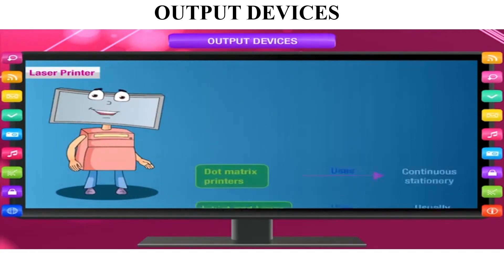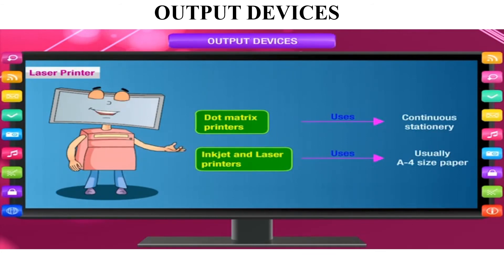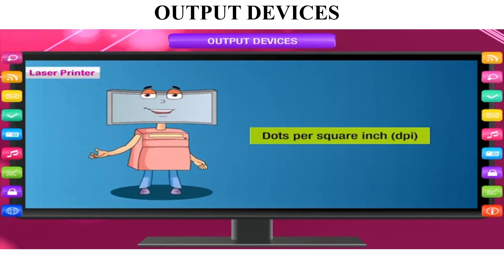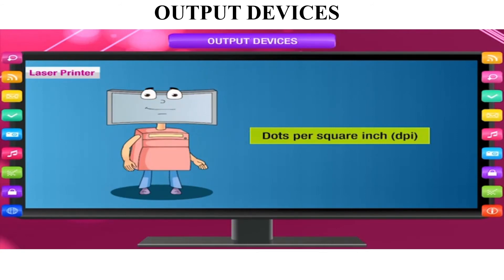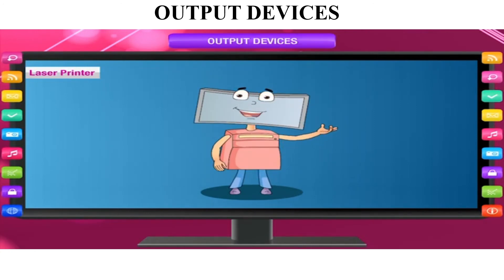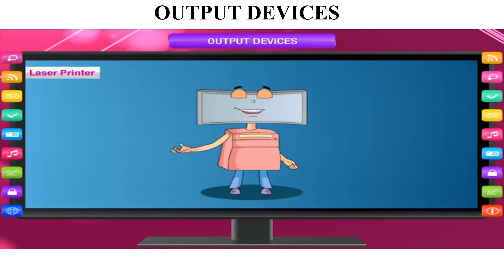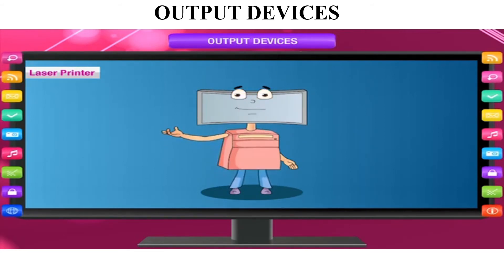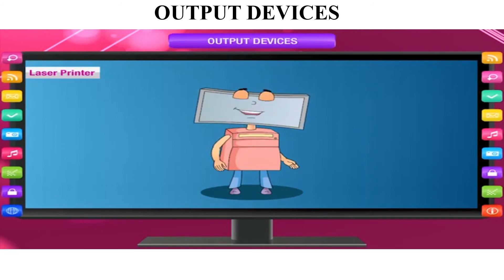The dot matrix printer uses continuous stationery (regular pages), while inkjet and laser printers usually use A4 size paper. Print quality is measured in dots per square inch. These are the input and output devices we learned — the output devices are the monitor and printer, and the input devices are the keyboard and mouse.